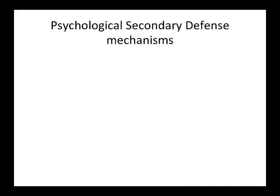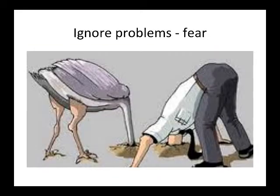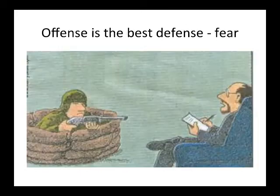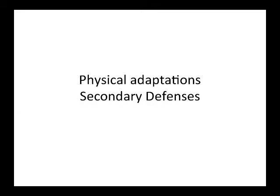The first examples are some psychological secondary defense mechanisms that you're all familiar with. We keep others at a distance, we ignore problems, and we become offensive or passive aggressive — all of this in the name of fear. That's the underlying feeling of the defense mechanism.